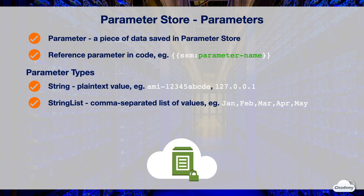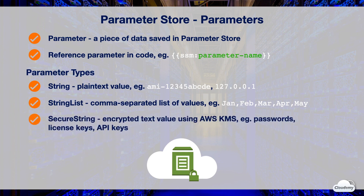String and StringList parameters are not encrypted, so it's not recommended to store sensitive data in them. To store sensitive data, you should use SecureString parameters. SecureString data is encrypted and decrypted using AWS KMS. You can either use a default KMS key provided by AWS or create your own customer master key. There is no charge from Parameter Store to create a SecureString parameter, but charges for use of AWS KMS may apply.